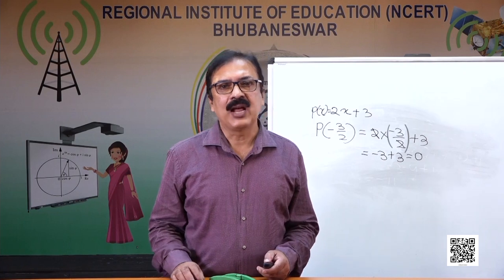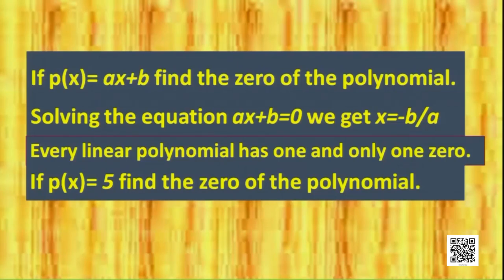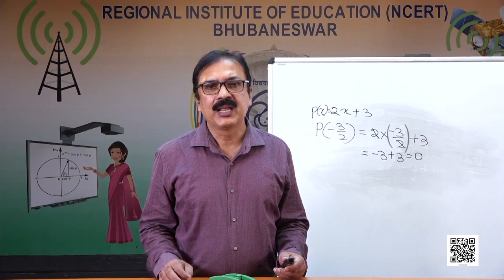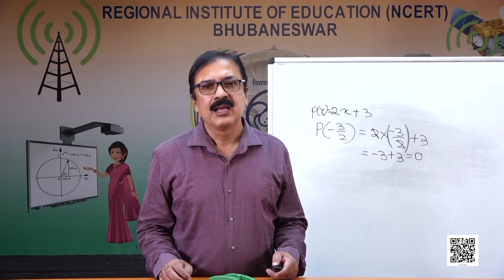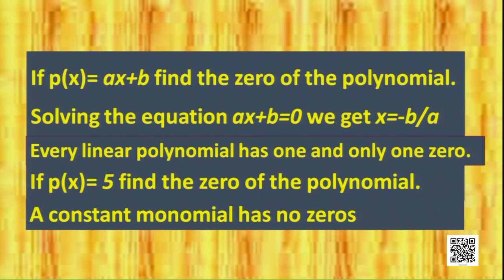Now let's take a constant polynomial: P(x) = 5. Whatever value you substitute for x, the value will always be 5 — it can never be 0. So a zero-degree polynomial, i.e., a constant polynomial, cannot have any zero. A constant monomial has no zeros.